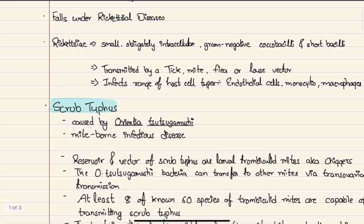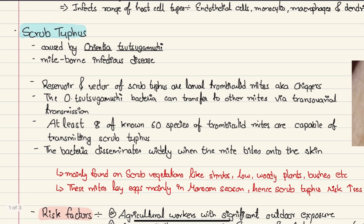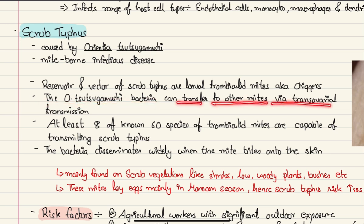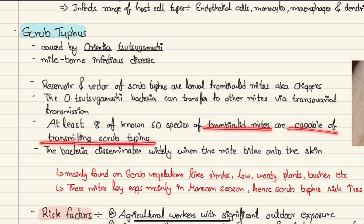Scrub typhus is caused by the bacterium Orientia tsutsugamushi. It is a mite-borne infectious disease transmitted by the bite of a mite. The reservoir and vector are the larval stages of trombiculid mites, also known as chiggers. Orientia tsutsugamushi can transfer to other mites via transovarial transmission — passing from one generation of mites to the next — and at least 8 out of 60 species of these mites are capable of transmitting scrub typhus.